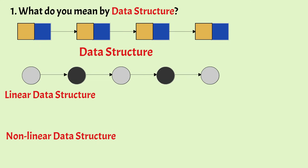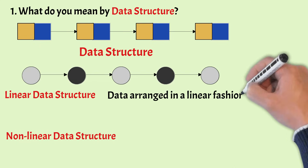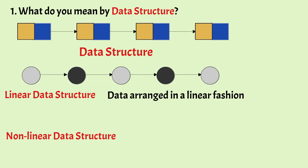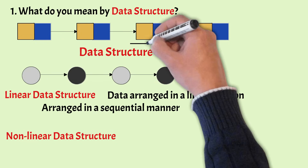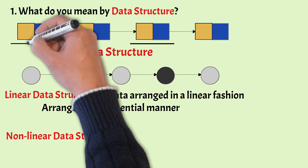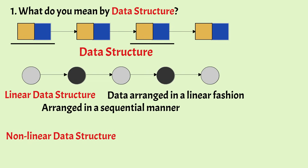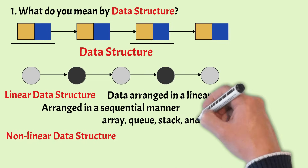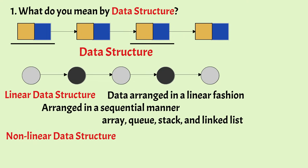In a linear data structure, the data items or elements are arranged in a linear fashion, meaning they are arranged in a sequential manner. Each element is connected to the element in front of it and to the element behind it. Examples of linear data structures are array, queue, stack, and linked list.